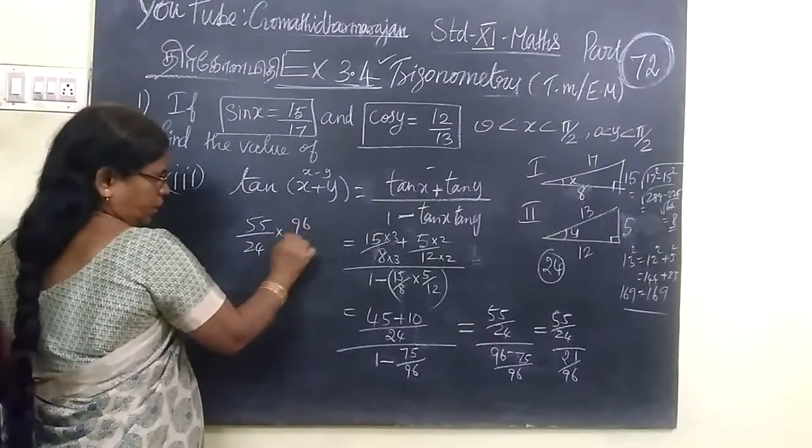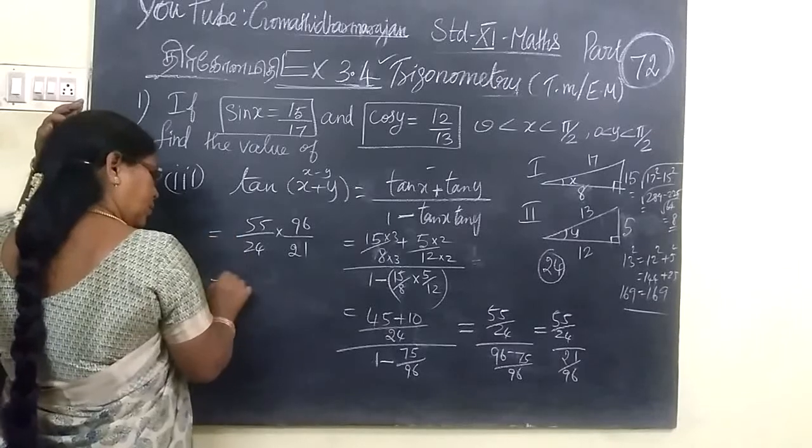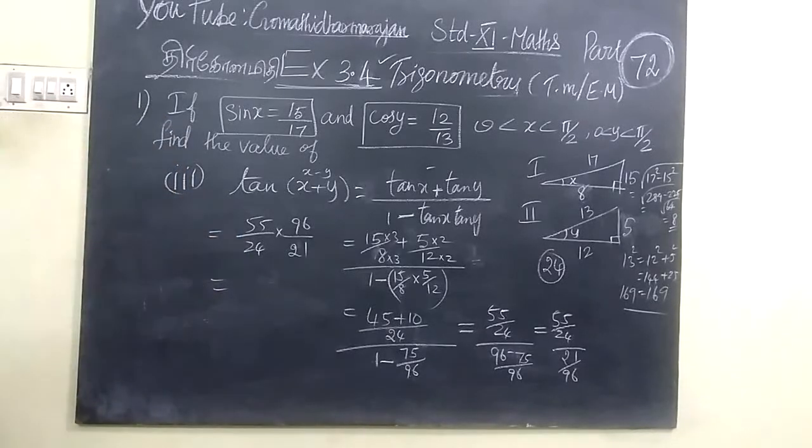So you can write 55 times 4 by 24 times 21. Let us check the answer for this.